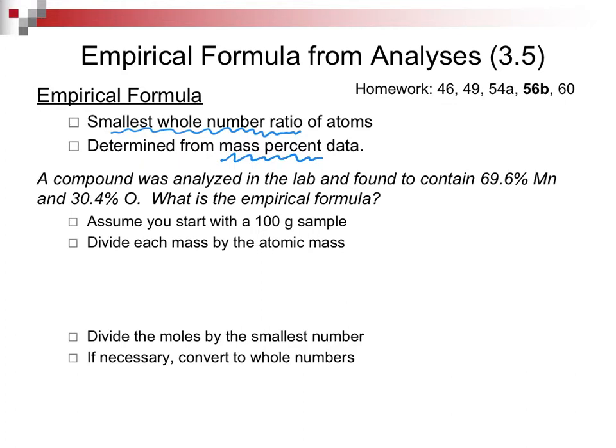So the problem we have to illustrate says we have 69.6% manganese and 30.4% oxygen. We are going to assume that we have a 100 gram sample. So that 69.6% becomes 69.6 grams. We look on the periodic table to find the molecular weight of manganese, which is 54.94. We come up with a number of 1.267 moles of manganese.